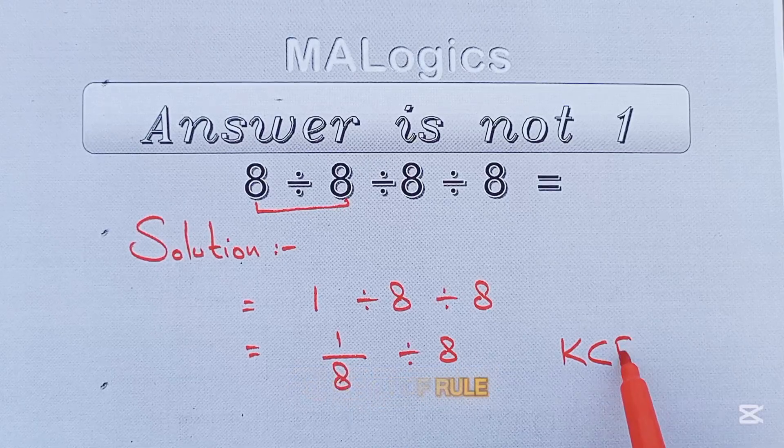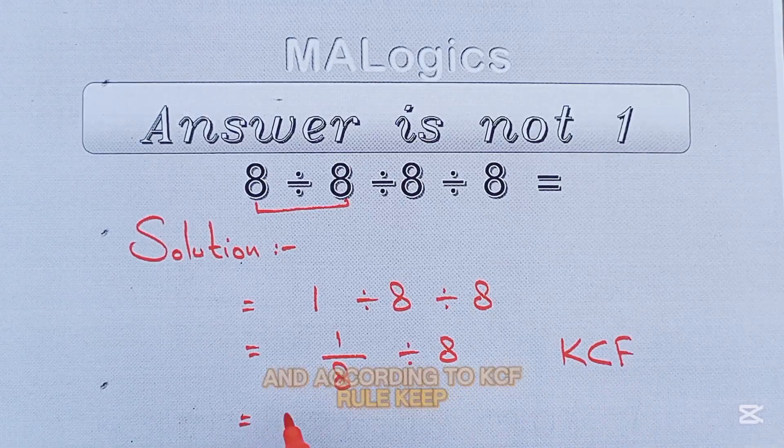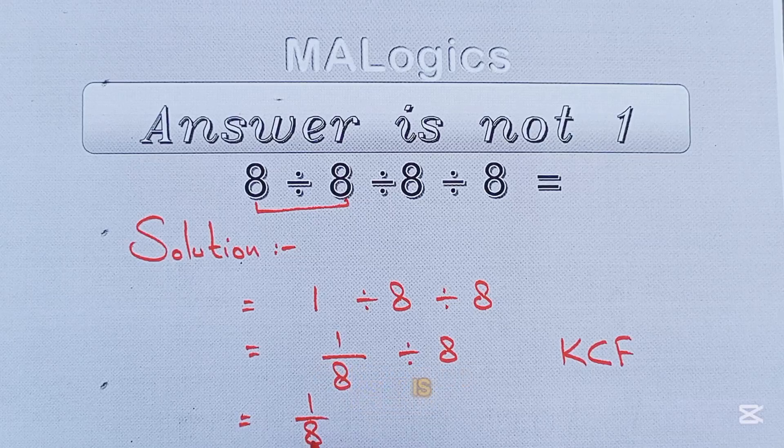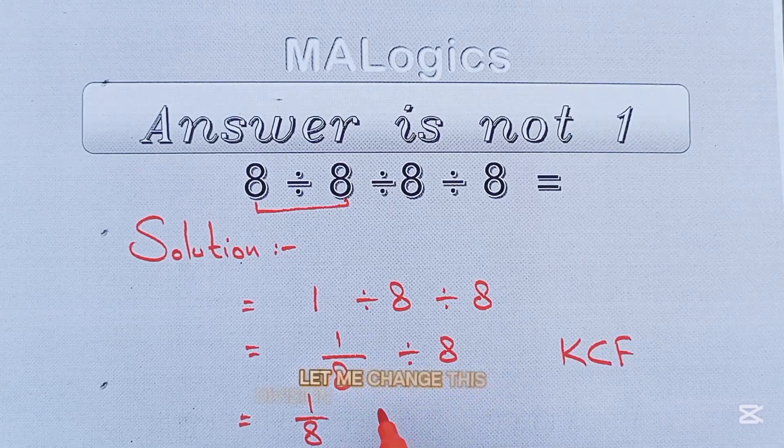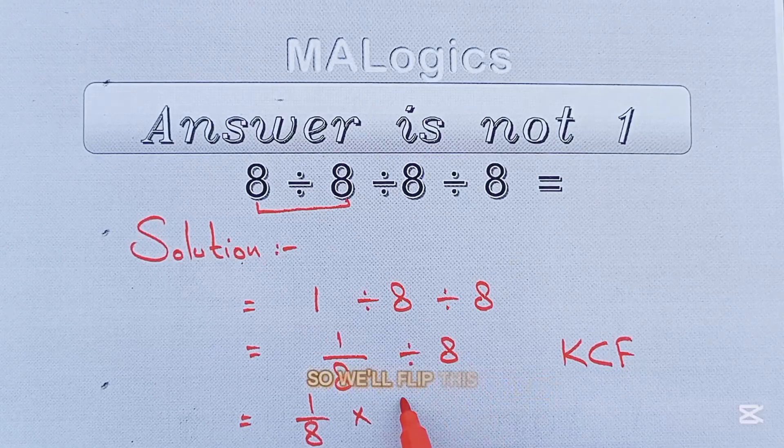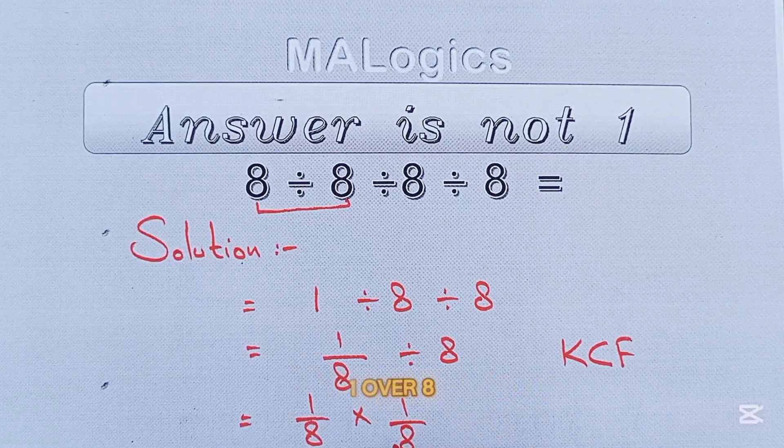We have to choose the KCF rule, and according to KCF rule, keep the first fraction as it is. So keep this 1 over 8 as it is. Change the sign. So let me change this division into multiplication and flip the second number. So we'll flip this 8 into 1 over 8.